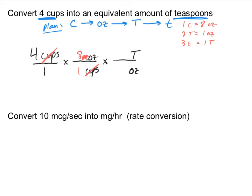I know there are two tablespoons in one ounce. Multiplying by this conversion factor, ounces cancels and I'm in tablespoons. That's still not what I want, so I do one more conversion factor. Since tablespoons is in the numerator, I put it in the denominator of the next factor and go into teaspoons. There are three teaspoons in one tablespoon. Finally, tablespoons cancels and I'm left with teaspoons.